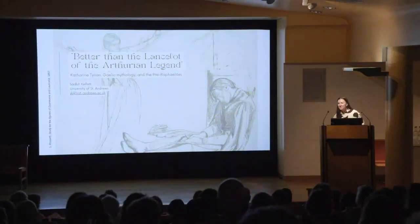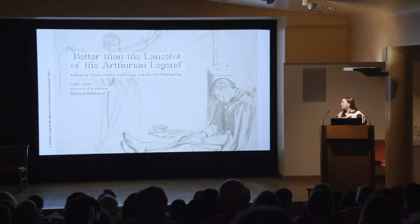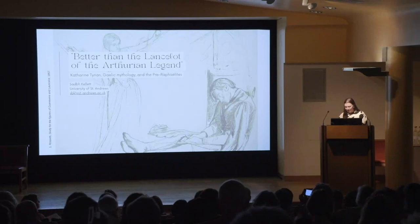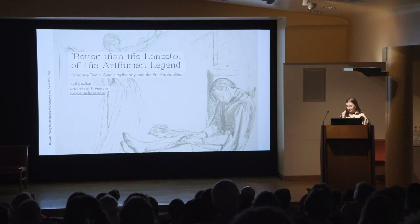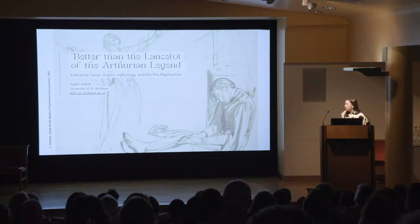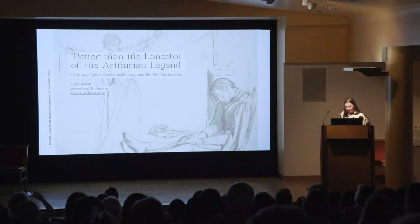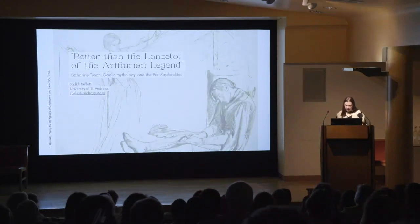Thank you so much for the fantastic and deeply interesting talks that we've had today and yesterday. I'm approaching the Rossettis from a slightly different angle in relation to Celtic and Irish studies. As part of my ongoing thesis, I'm looking at how the Irish writer Catherine Tynan applied Rossetti and medievalist aesthetics in her modern adaptation of the Irish myth Tóraíocht Dhiarmada agus Ghráinne in her 1887 poem The Pursuit of Diarmuid and Gráinne. I particularly focus on how Rossetti themes are used to make room for both her Catholic faith and Irish nationalist feminism within her retelling.